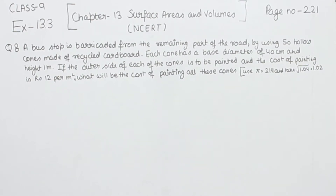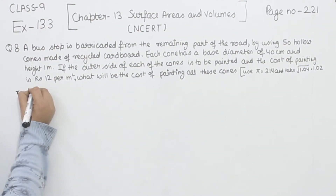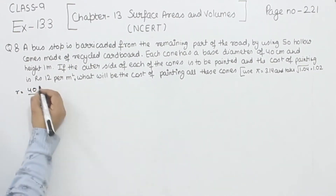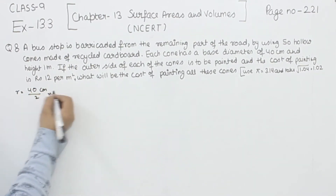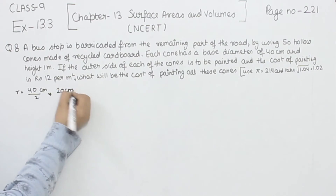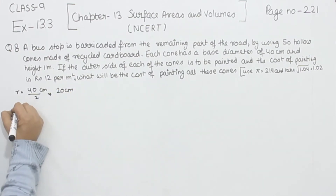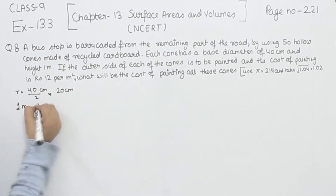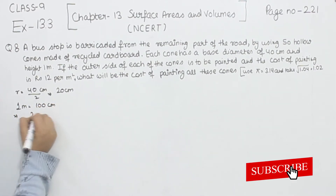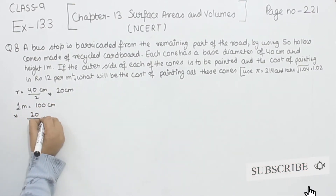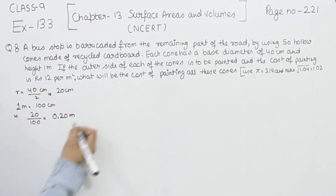First of all, we are given the diameter, so we have to find the radius. Radius is equal to 40 cm divided by 2, which is 20 cm. Now we have to convert this into meters by dividing by 100, so this is 0.20 meter.